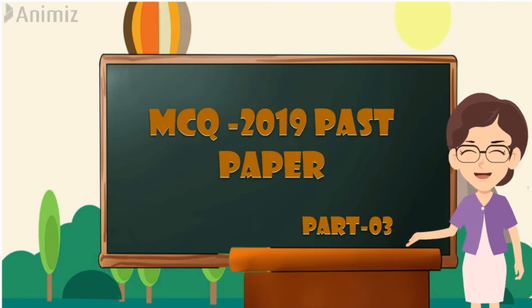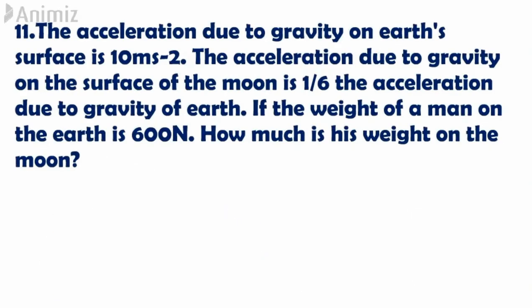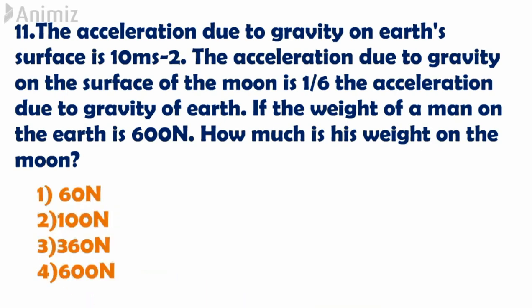Now let's start. The first question: the acceleration due to gravity on Earth's surface is 10 m/s². The acceleration due to gravity on the surface of the Moon is 1/6 of the acceleration due to gravity on Earth. If the weight of a man on Earth is 600 Newton, how much is his weight on the Moon? When you read this question it may seem difficult, but if we understand it, it's really simple. We'll understand the question through a diagram.